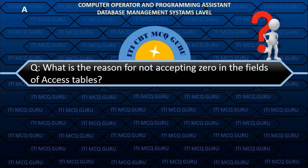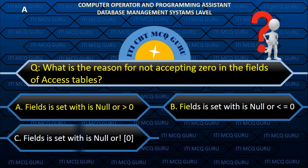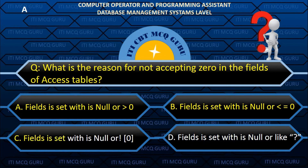What is the reason for not accepting 0 in the fields of an Access table? A. The field is set with Is Null Or > 0.